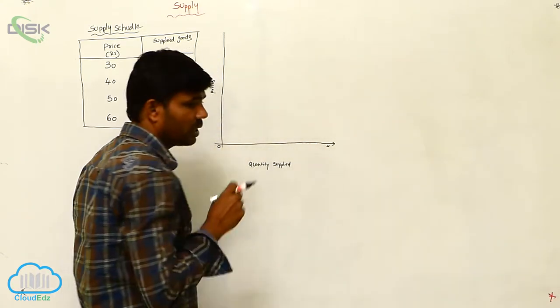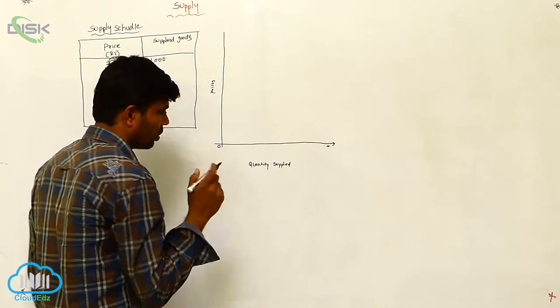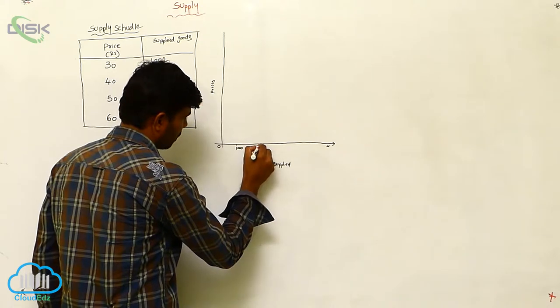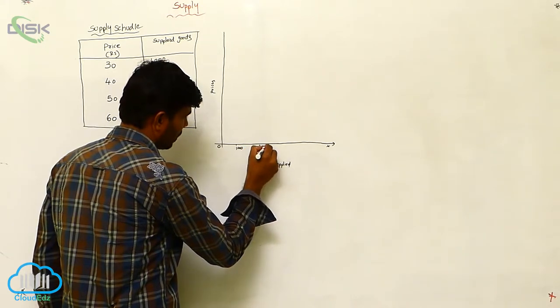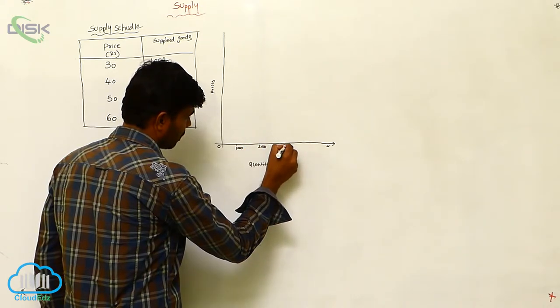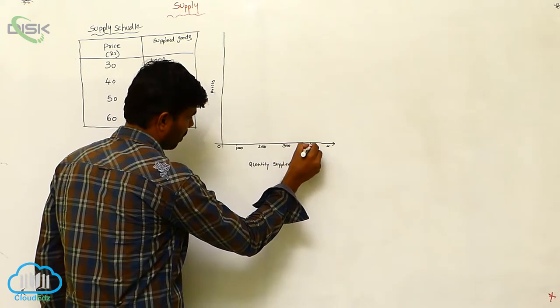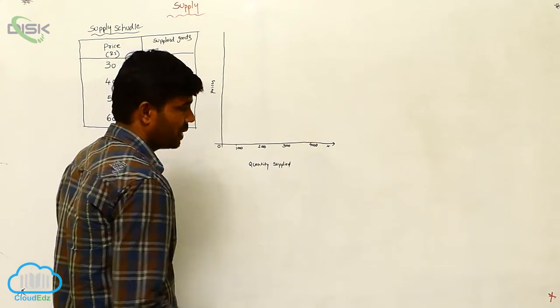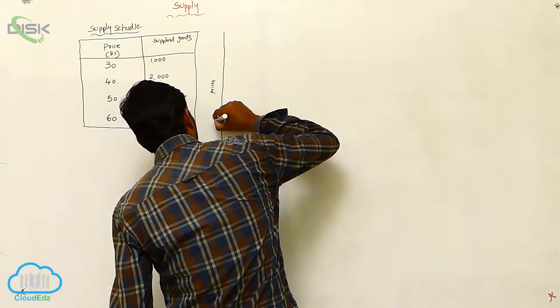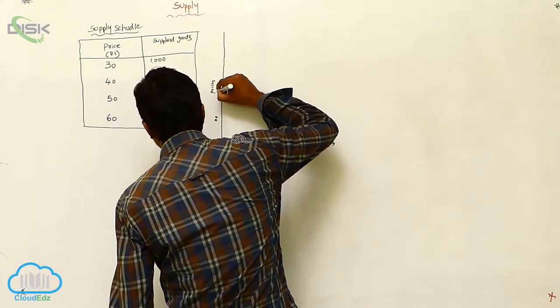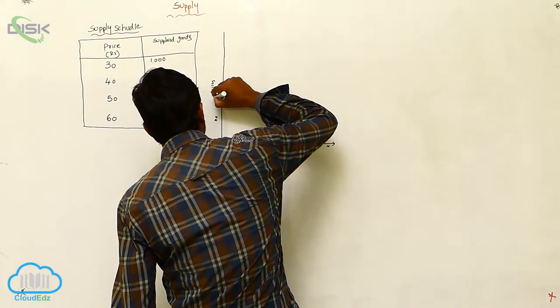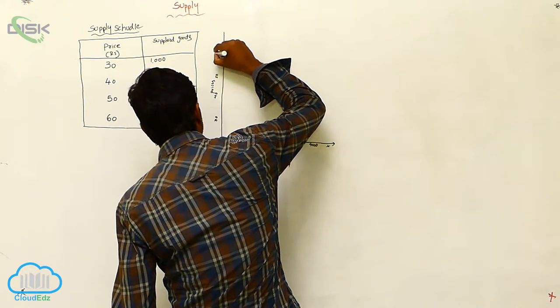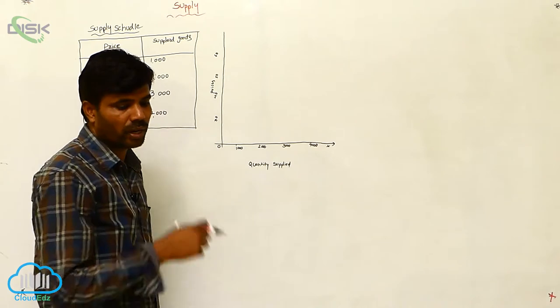Price and quantity: 1000 to 4000. 1000, 2000, 3000, 4000. Price is 30, 40, 50, 60. We can draw the points.